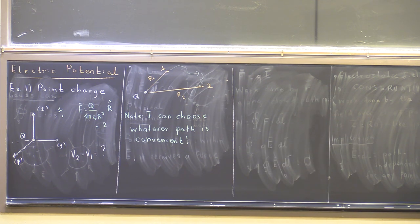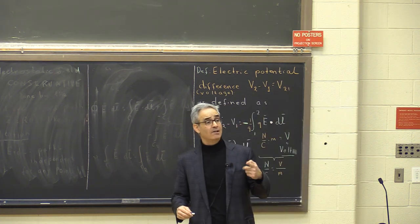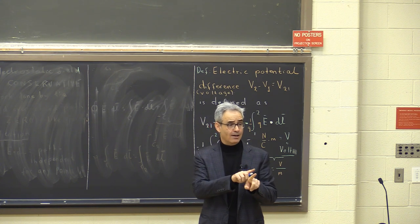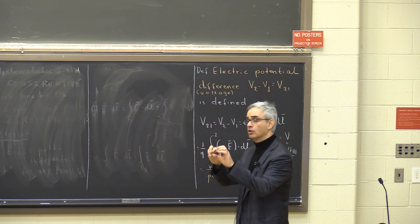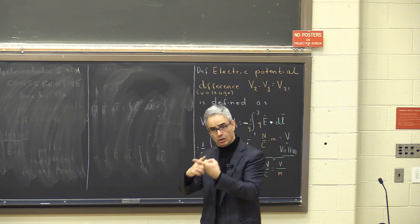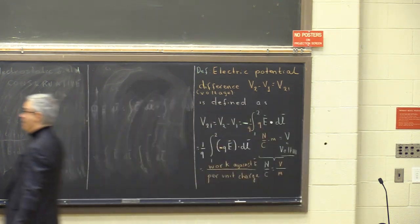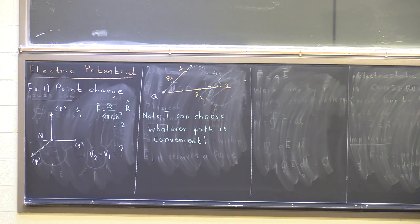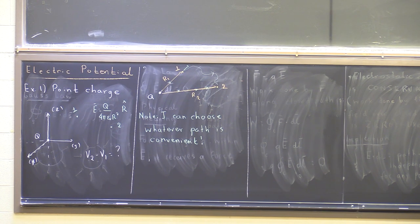The integral inside has a dot product, so I will exploit two cases where it is easy: when E and dl are parallel or anti-parallel, the dot product equals the product of their magnitudes; when they are perpendicular, the dot product is zero. Since the electric field points in the radial direction, I will choose paths that are either perpendicular to the electric field — giving zero contribution — or parallel to it, making the calculation easy.